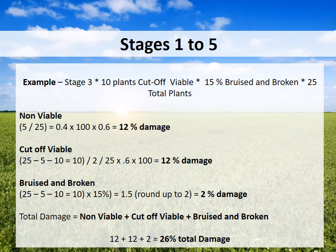Now to get our total damage loss, we use the math from the previous steps. The non-viable was 12%, the cut-off viable was 12%, and the bruised and broken was 2%. Add them all together to get a total of 26% total damage on the pea crop.